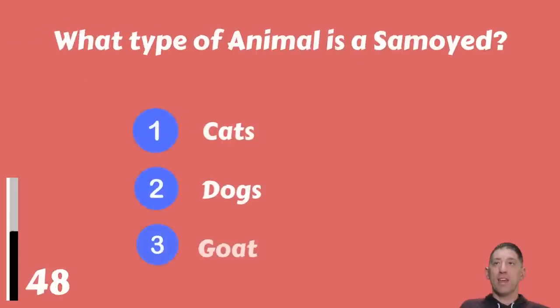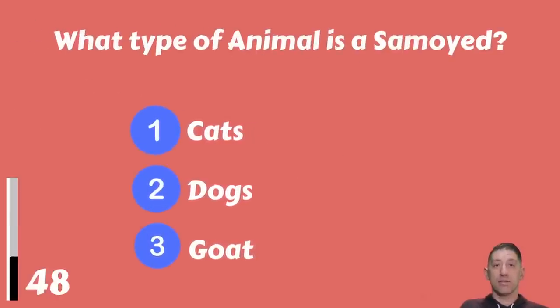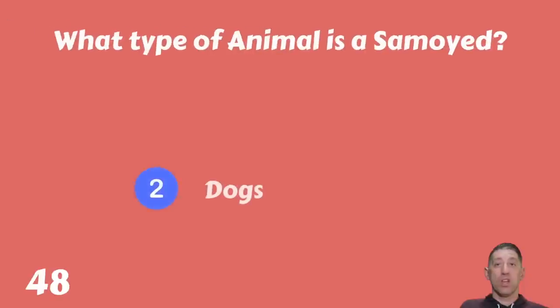What type of animal is a Samoyed — cats, dogs, or goat? The answer is dogs.